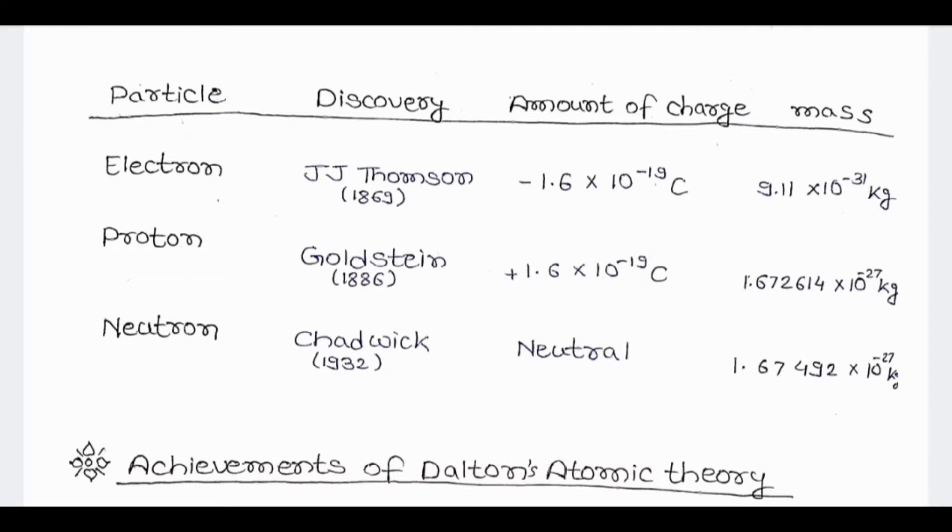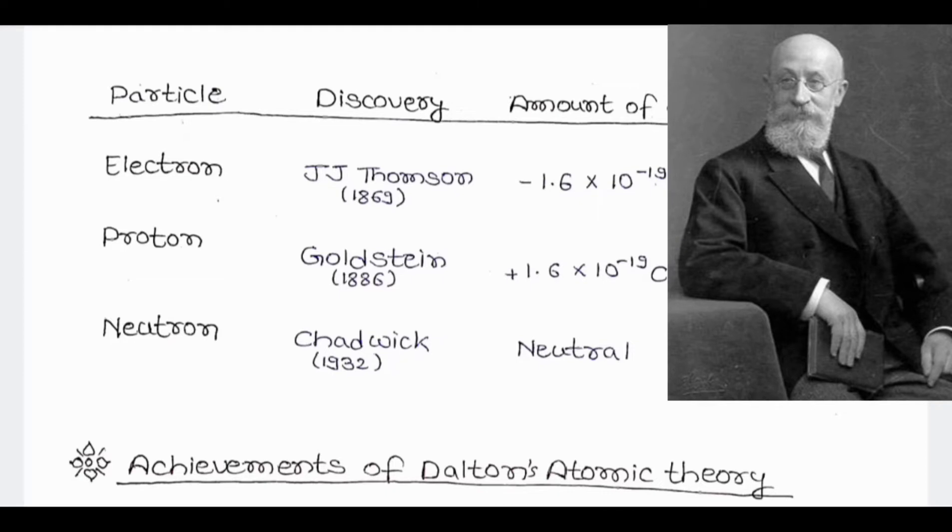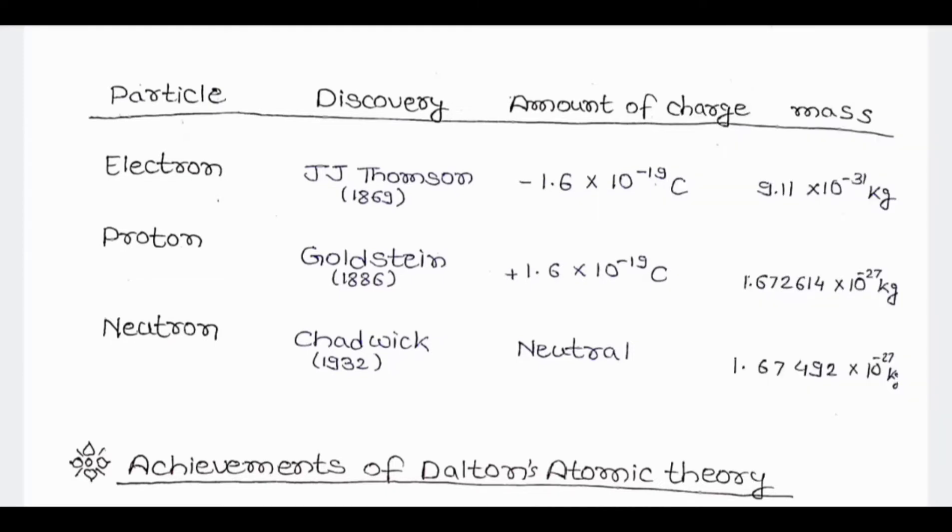Proton was discovered by Goldstein in 1886 and it has an amount of charge of plus 1.6 into 10 to the power minus 19 coulomb and it has a mass of 1.672614 into 10 to the power minus 27 kg.